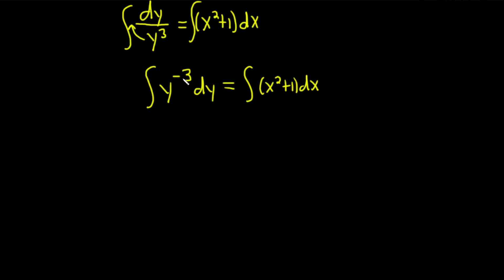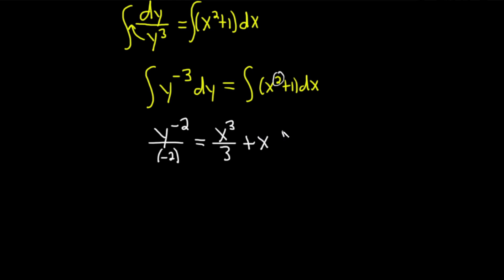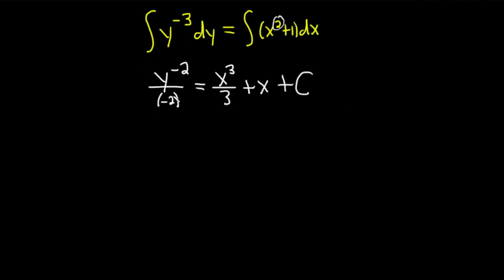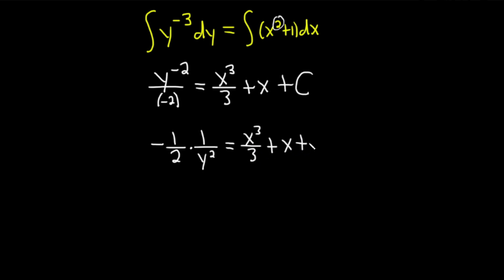Integrating the left-hand side: add 1 to the exponent to get y to the negative 2, then divide by the result — that's the power rule. On the right side, adding 1 to the exponent gives x cubed divided by 3, plus integrating 1 gives x, plus a constant of integration C. Bringing the y to the negative 2 downstairs, we get negative one-half times 1 over y squared equals x cubed over 3 plus x plus C.